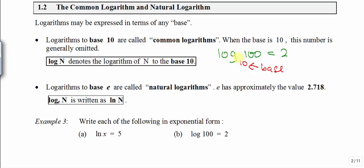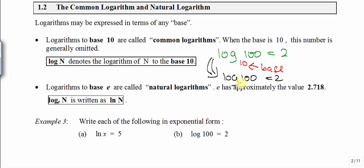We have seen an example of log base 10, 100 is equal to 2. Log base 10 is a commonly used log, and there's a name given to it: logarithms to base 10 are called common logarithms. When the base is 10, this number is generally omitted — it's so commonly used that sometimes we just omit the 10. The equivalent of log base 10 of 100 will simply be written as log 100. If you don't write the base, it's understood that the base is 10.